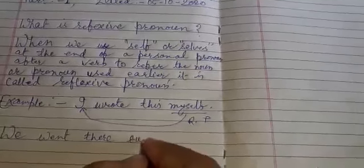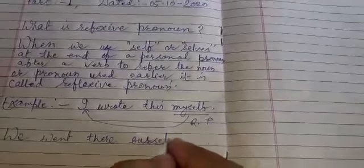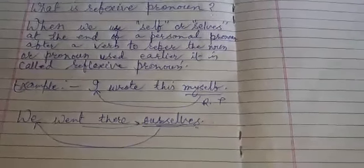Now, for example: 'We went there ourselves.' Here, 'ourselves' has been used after a verb, and it tells something about the pronoun used earlier — 'we.' So 'ourselves' refers to the pronoun 'we' and has been used after a verb.